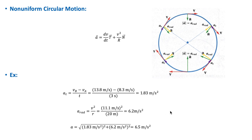Let's consider this example. A car is moving in a circular track of radius 20 meters, and it accelerates uniformly from a speed of 30 kilometers per hour to 50 kilometers per hour in 3 seconds. We want to find the total acceleration of the car at the instant its speed is 40 kilometers per hour. We convert the speeds to meters per second by multiplying by 1,000 and dividing by 3,600. The tangential acceleration is 1.83 meters per second squared, and the radial acceleration is 6.2 meters per second squared. The total acceleration is the square root of a_tangential squared plus a_radial squared, giving a total acceleration of 6.5 meters per second squared.